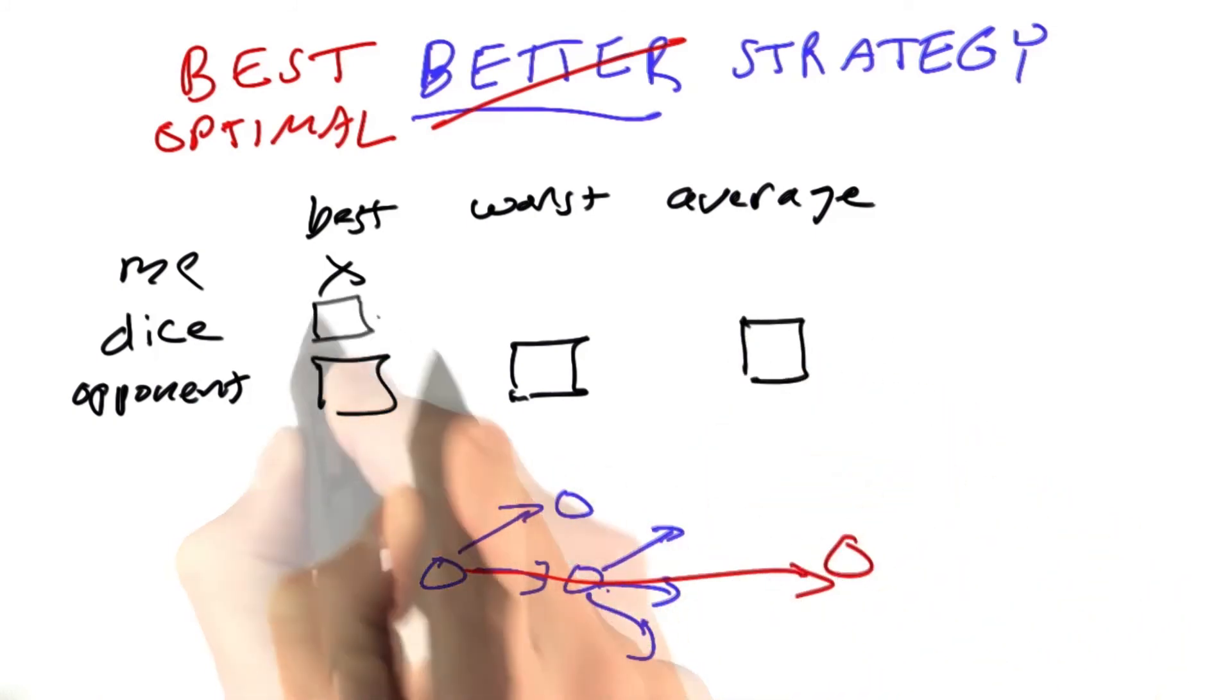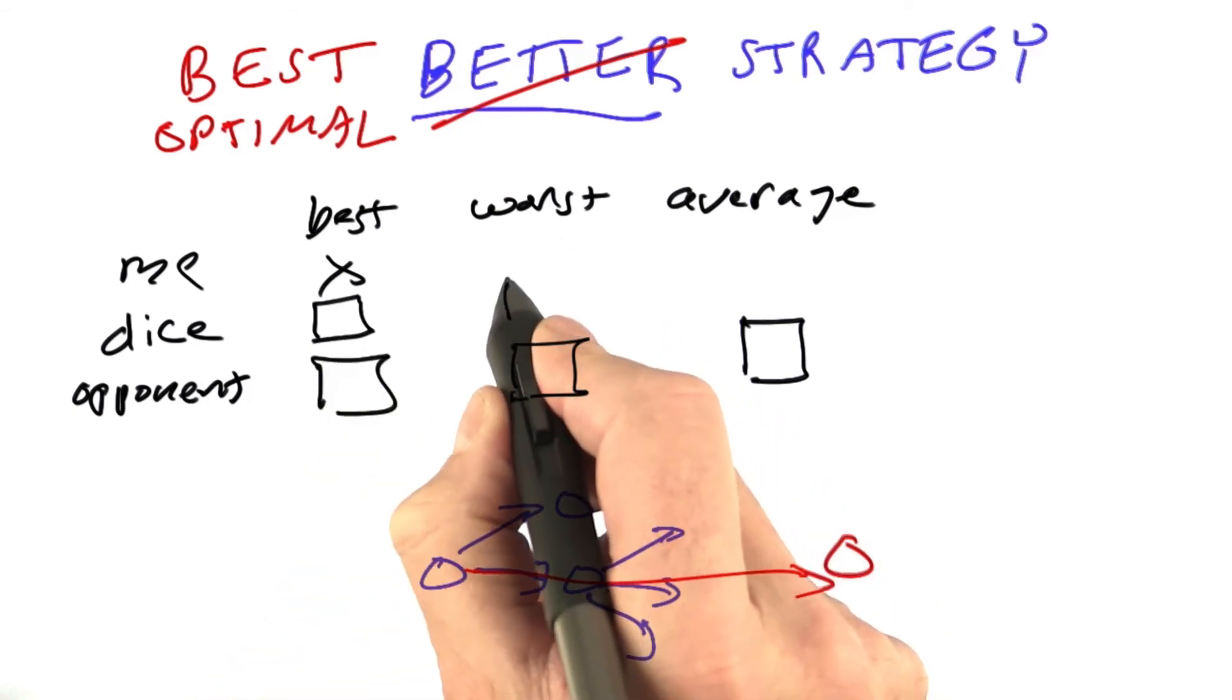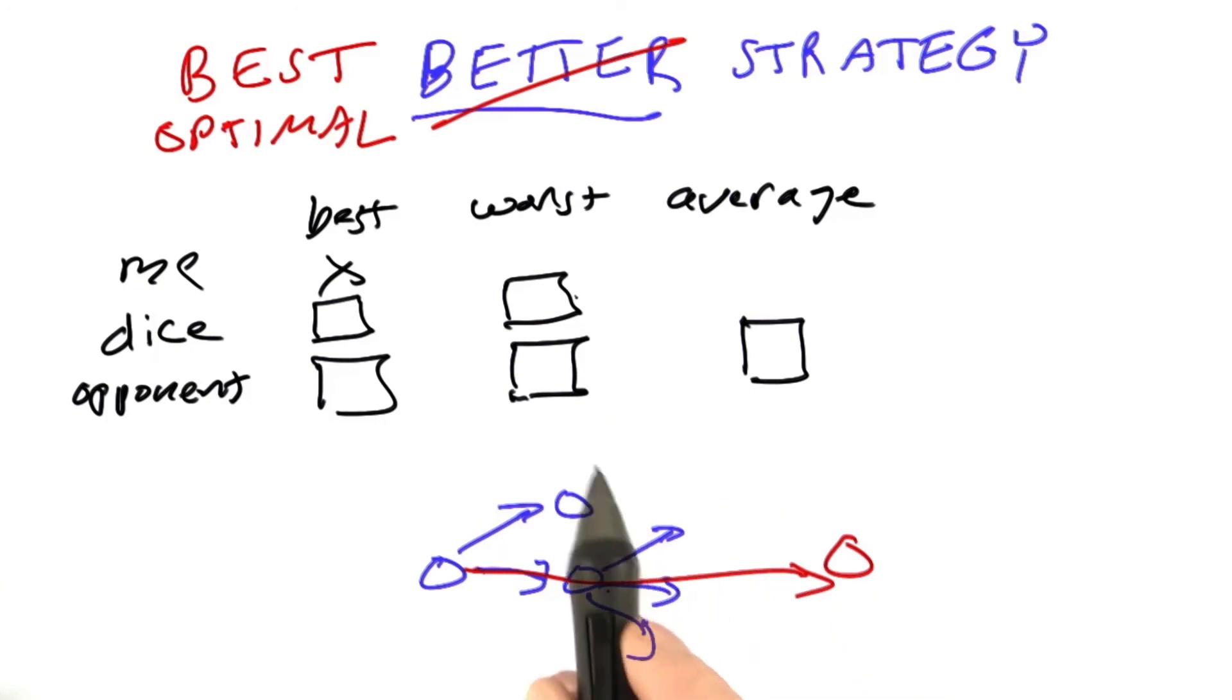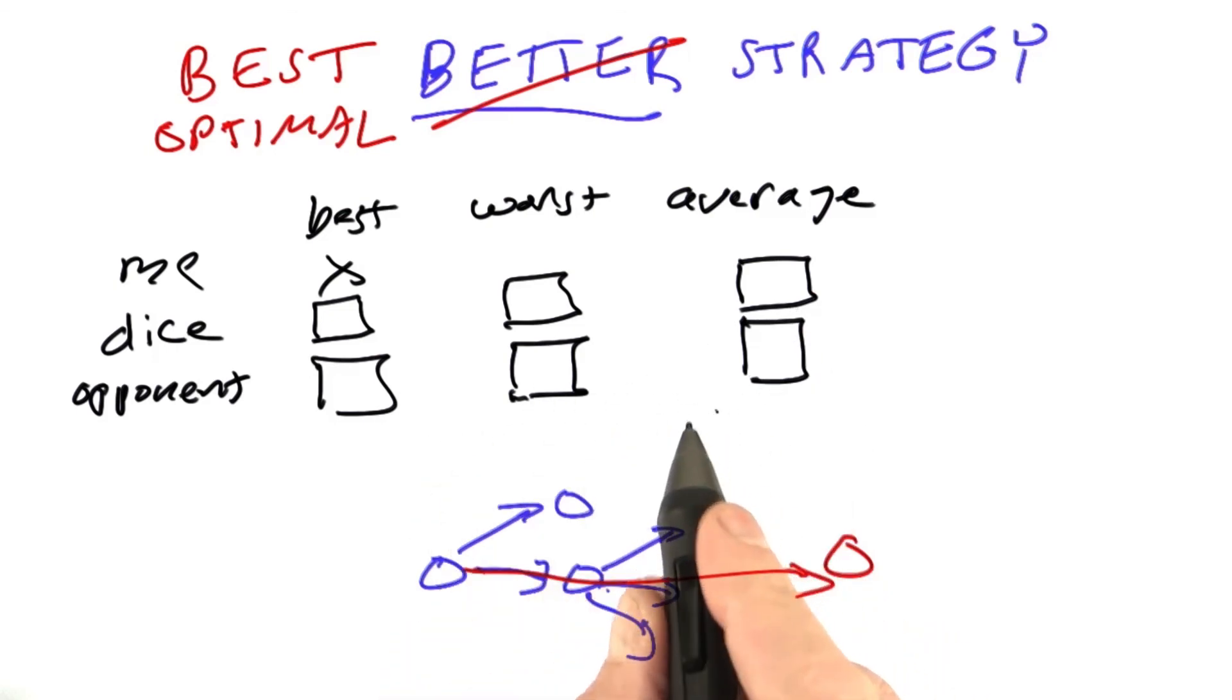Tell me the same for the dice. Is the dice with me and trying to get the best result for me? Is the dice plotting against me and trying to get the worst result for me? Or is the dice going to average out? Go ahead and click the appropriate boxes.